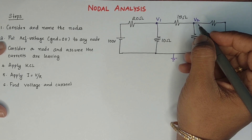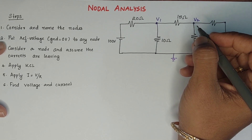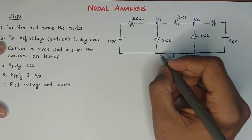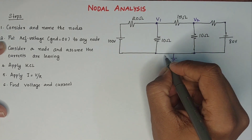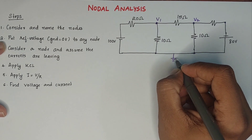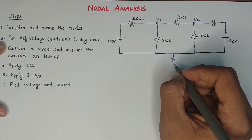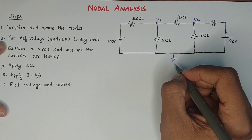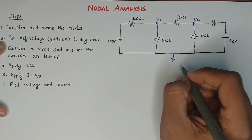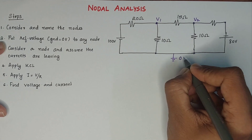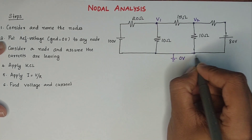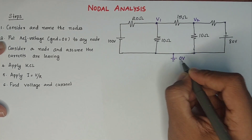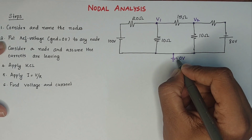The second step is to put the reference voltage to any node. I have assigned a reference voltage to this node — the ground. The ground is nothing but 0V.